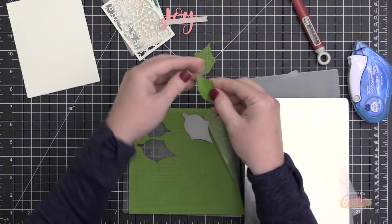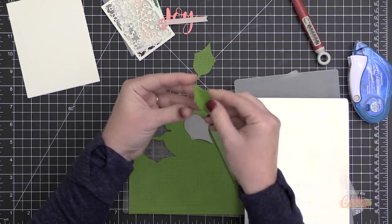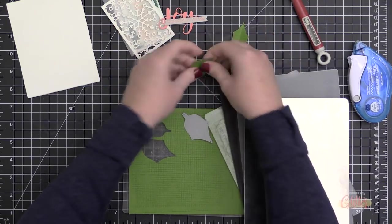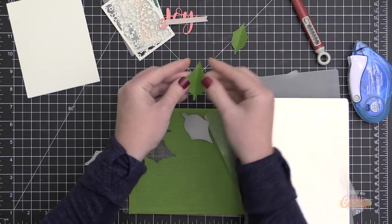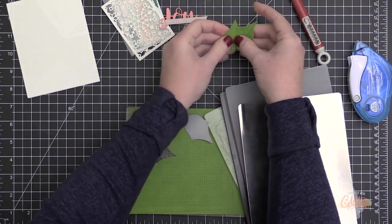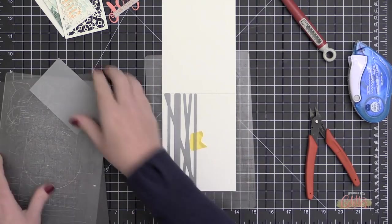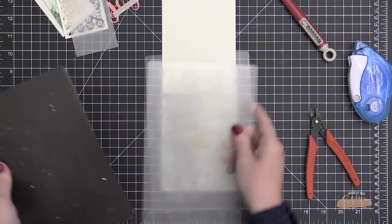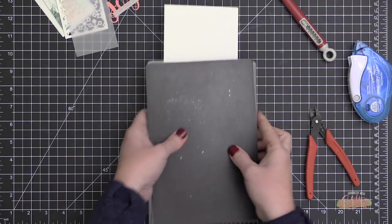So once I have that stamped onto the green cardstock, I die cut these leaves. Then I'm going to just fold them on the score lines that are created with the die, and these are going to be just a really simple embellishment on my card front.